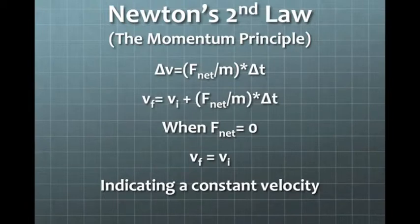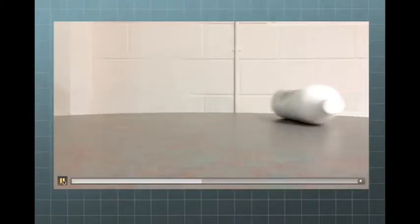By looking at this equation, we can see that if F_net equals zero, then v_final will equal v_initial, meaning that the object will have a constant velocity. In other words, if an object is moving at a constant velocity, then it will continue to do so unless it interacts with a force. This is the video of the bottle of conditioner. The bottle is the system being observed.